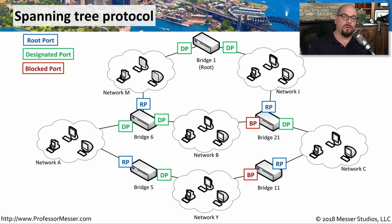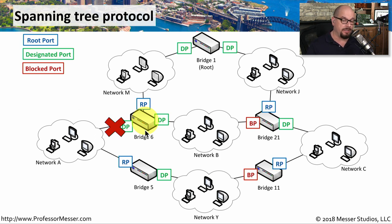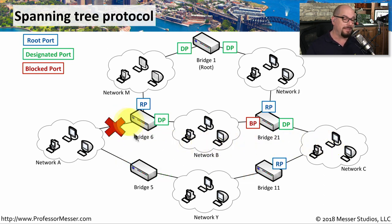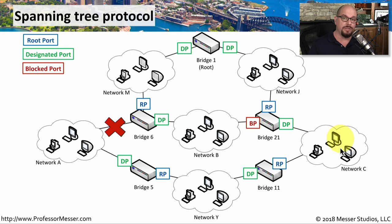No network is perfect, and occasionally problems might occur. If a particular connection has a problem and Network A is not able to communicate through Bridge 6, then anyone on Network Y would not be able to communicate over to Network C. Fortunately, spanning tree will recognize when changes occur with the network infrastructure, examine the situation, and modify the blocked port configuration so that Network Y can work around the problem by communicating directly to Network C.